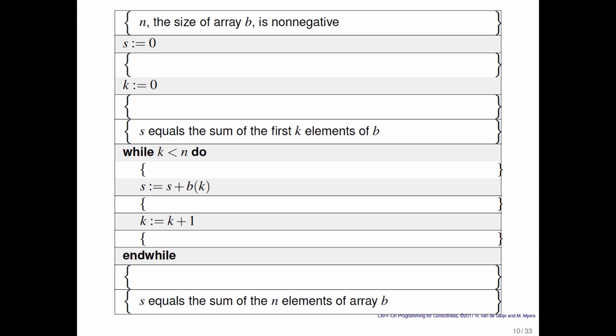Well, it's always good to start by saying what is in the variables when you get started. So here we say that n is the size of array b, and it's non-negative. Upon completion, at the bottom here, s should equal the sum of the n elements of array b.